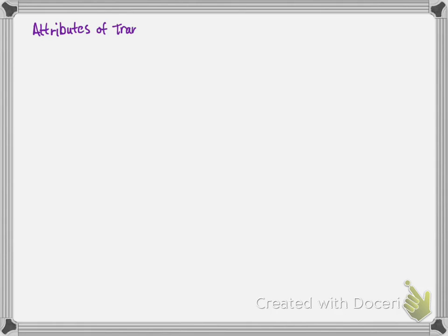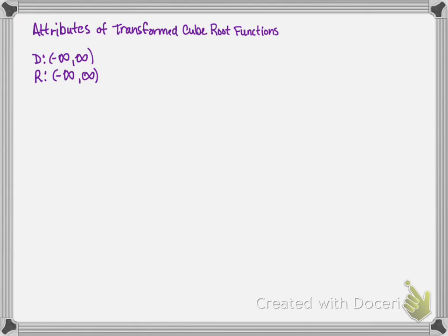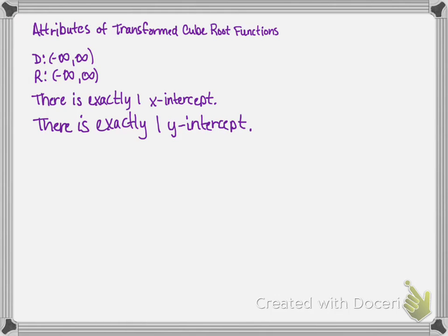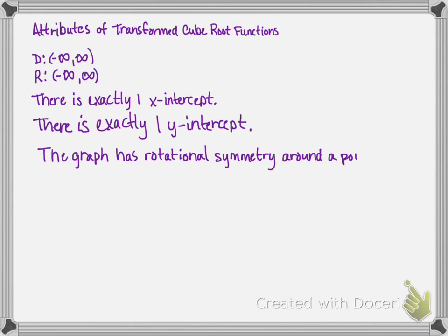Finally, attributes of transformed cube root functions. Very similarly to the parent function, the domain is going to be all real numbers, ranging from negative infinity to positive infinity, for all transformed cube root functions. The range will also be all real numbers. For all transformed cube root functions, there will be exactly one x-intercept and exactly one y-intercept. Finally, all cube root functions have graphs that have rotational symmetry around a point.